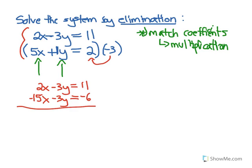Now we can see our coefficients are matching — negative 3y in the first and negative 3y in the second. The beauty about systems of equations is that you can add or subtract equations from each other. We're trying to eliminate one variable to solve for the other. So if we want to get rid of y, we subtract the second equation from the first, because negative 3y minus negative 3y gives 0y, eliminating y.